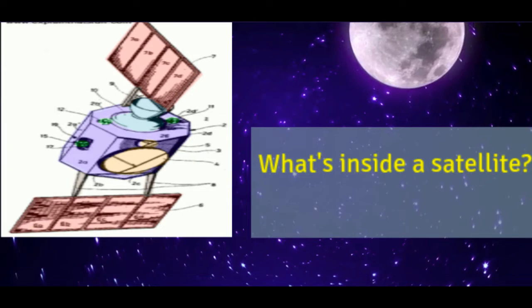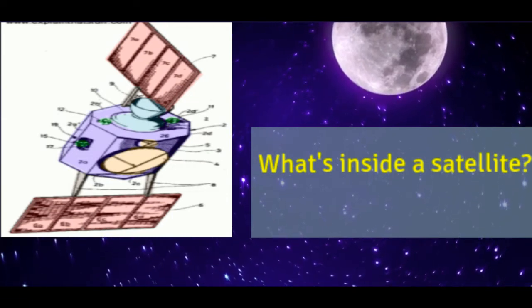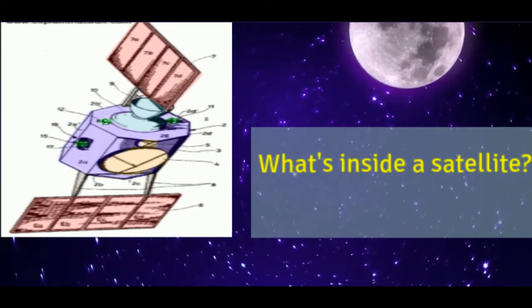Components include: large parabolic dish antenna for sending and receiving signals, small parabolic dish antenna for sending and receiving signals, lower solar battery of four solar panels, upper solar battery of four more solar panels, and supports that fold out the lower solar panels once the satellite is in orbit.